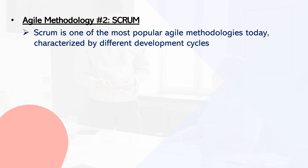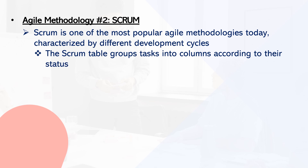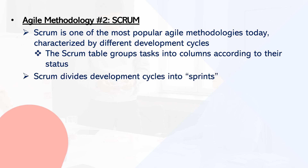Framework number two: Scrum. Agile Scrum is one of the most popular agile methodologies today, characterized by various cycles of development. In many aspects, Scrum and Kanban are comparable — Scrum typically uses a Scrum board similar to a Kanban board, grouping tasks into columns based on progress. Scrum divides the development process into units known as sprints, concentrating on planning and controlling one sprint at a time.